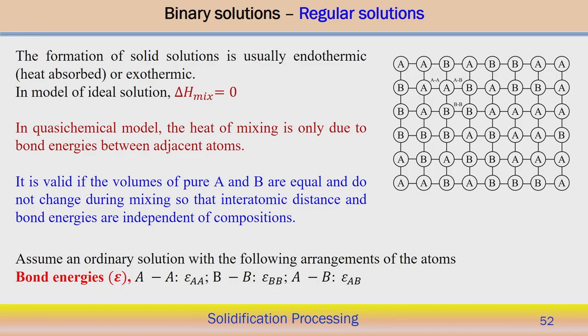If we are mixing atoms A and B in a binary solution, and the volumes of pure A and pure B are equal and do not change during mixing, then there is no change in volume in the solution. In that case, the interatomic distance and bond energies can be considered independent of composition — this is a very specific situation where these parameters are independent of composition if there is no volume change during mixing.